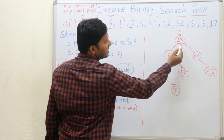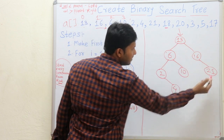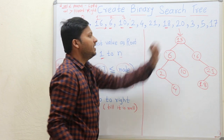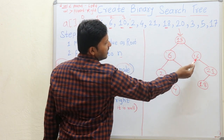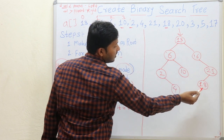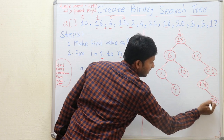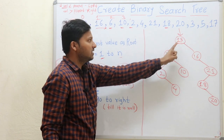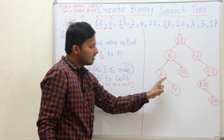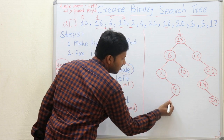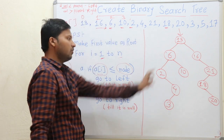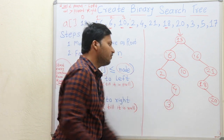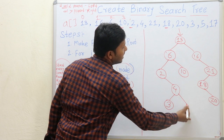Now 18: 18 is greater than 13, greater than 16, and less than 21, so 18 goes there. Now 20: 20 is greater than 13, greater than 16, less than 21, but greater than 18, so 20 comes as the right child of 18. Now 3: 3 is less than 13, less than 6, greater than 2, and less than 4, so it becomes the left child of 4. Now 5: 5 is less than 13, less than 6, greater than 2, and greater than 4, so it becomes the right child of 4.